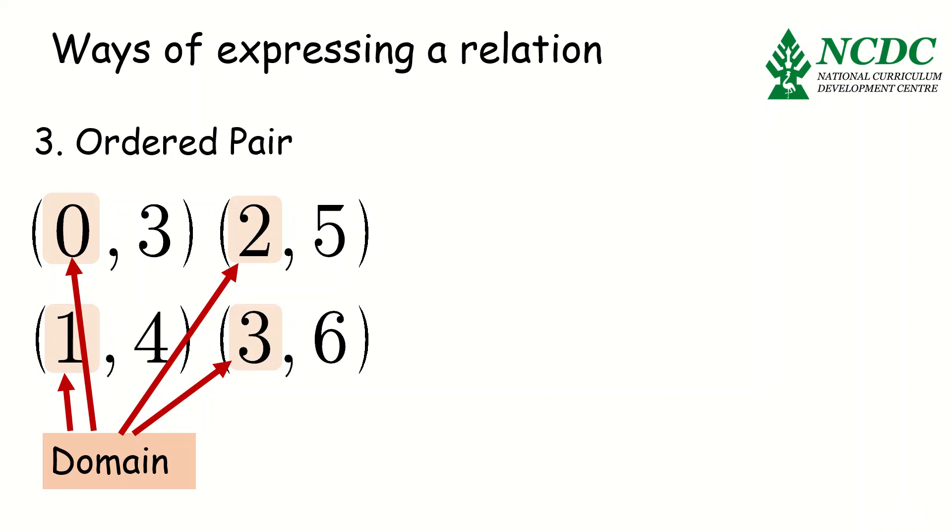I'm sure by now you can even guess which values form the range. But let's not leave it just hanging. The range values are 4, 3, 5, and 6. The order, remember, the order of these values matters. That's why they are referred to as ordered pairs.